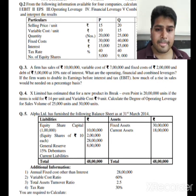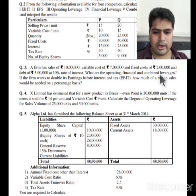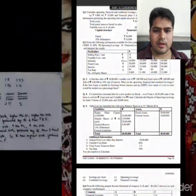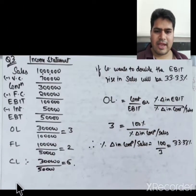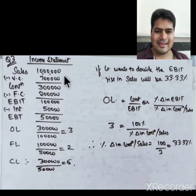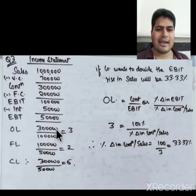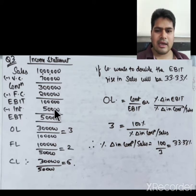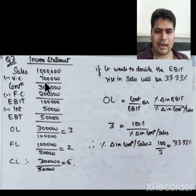First we prepare the income statement: sales minus variable cost gives contribution, minus fixed cost gives EBIT, minus interest gives EBT. OL = Contribution / EBIT = 3. FL = EBIT / EBT = 2. CL = Contribution / EBT = 6.